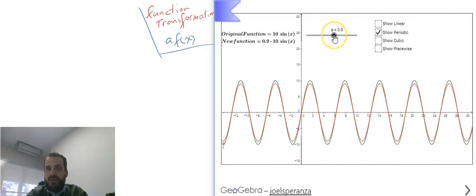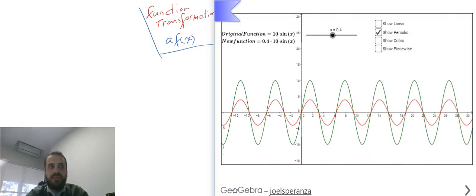If I've got an a value between 0 and 1, you can see it getting shorter. See it compressing around the x-axis.